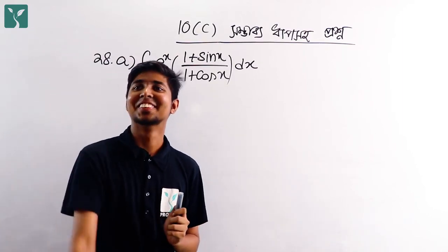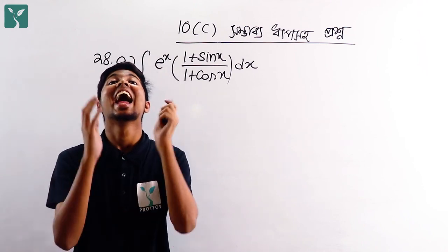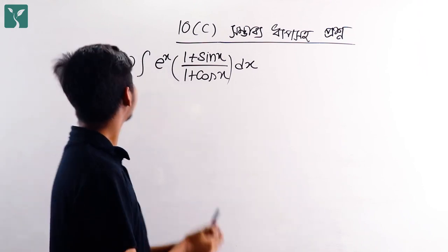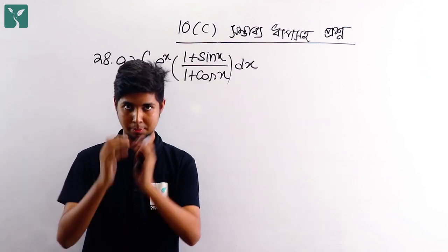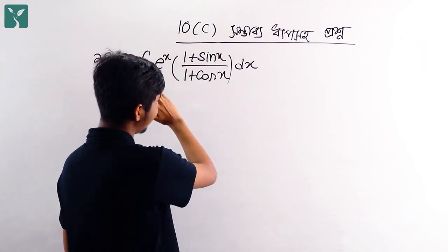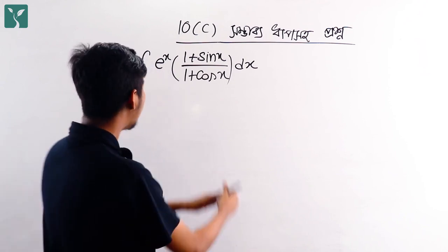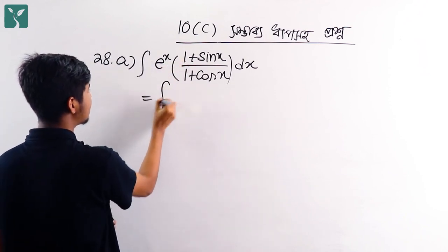28a is a problem statement. The problem is: integration of e to the power x times 1 plus sin x divided by 1 plus cos x dx. So let's see, we have to do this.